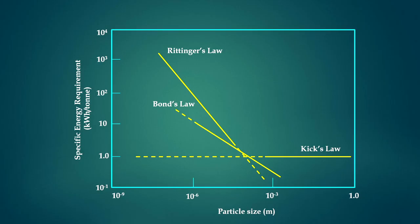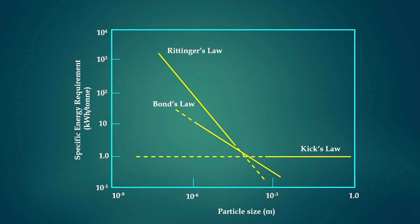A comparison of specific energy requirement in kilowatt-hours per ton as a function of particle size shows that Bond's law gives an intermediate energy profile. Kick's law shows approximately constant specific energy requirement for particle sizes beyond 10^-3 meters. Bond's law shows decreasing energy requirement as particle size increases, while Rittinger's law shows less specific energy requirement for higher particle sizes.